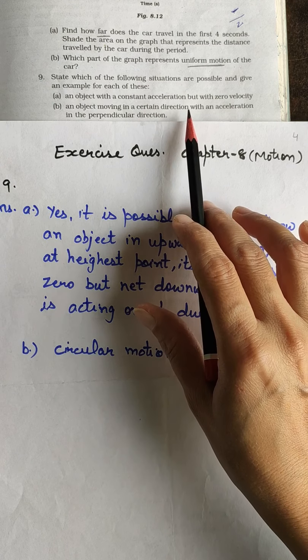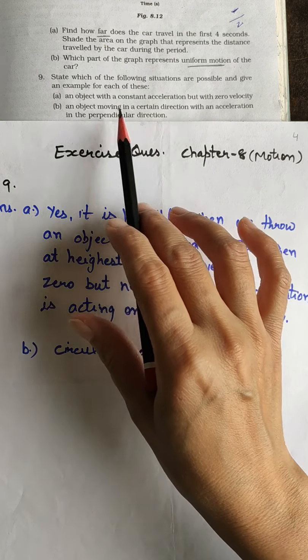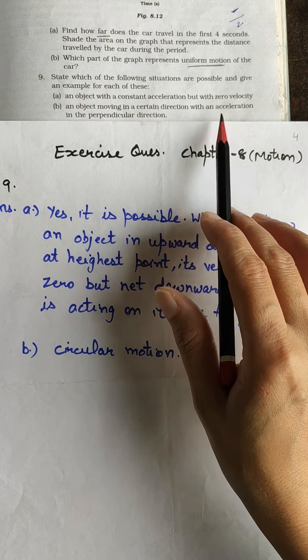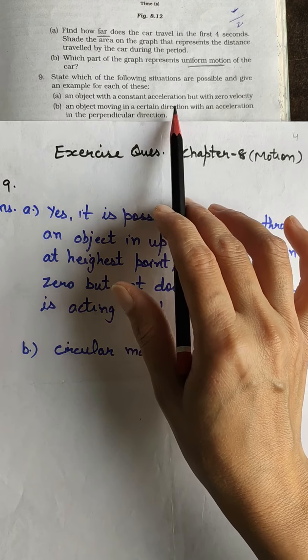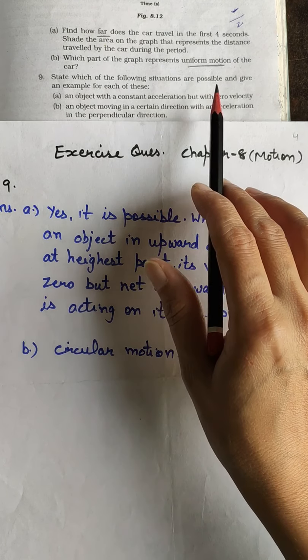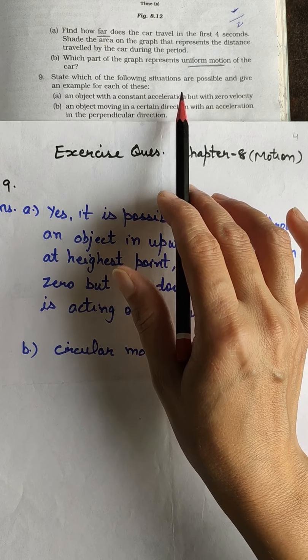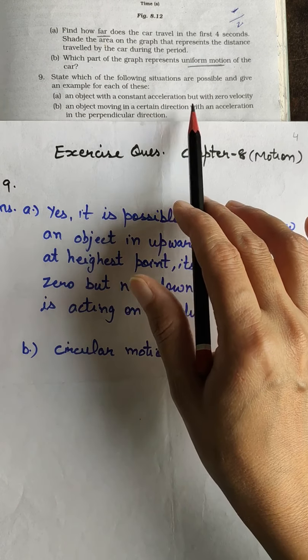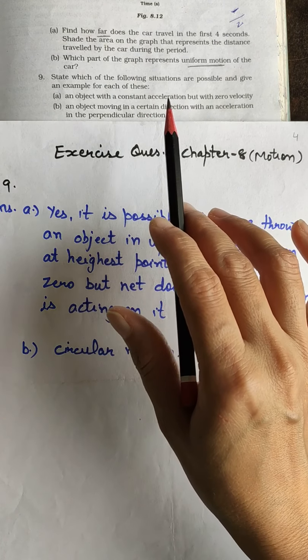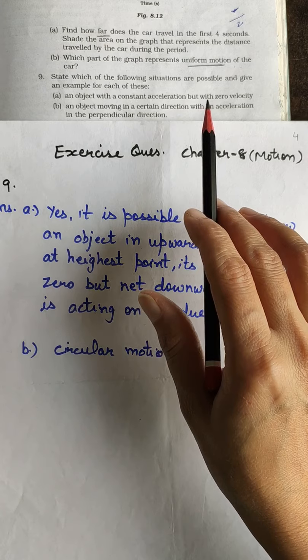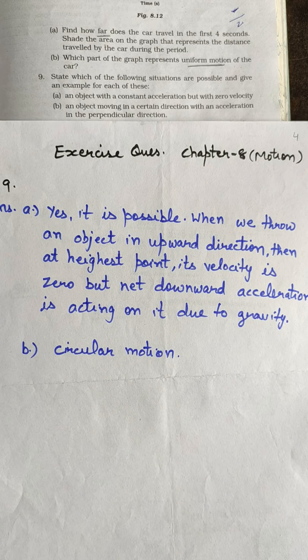In circular motion topic we have discussed that the acceleration is acting towards the center and the velocity was acting perpendicular to the circle, tangential to the circle. In that case the acceleration and moving direction, the velocity of object, was mutually perpendicular. So we will write answer circular motion.